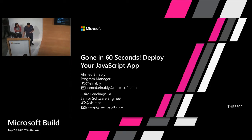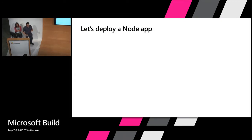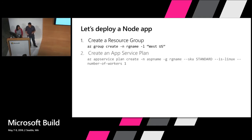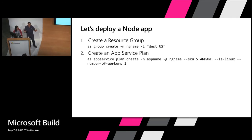But before doing that, let's actually look at what's the current experience. So to deploy a node app to Azure App Service, you need to create a resource group — actually, you need to know what a resource group is and then create one. You need to create an App Service plan. Again, you need to research what an App Service is. You need to know, like for Node, is it a Windows App Service or Linux App Service, what size, and so on. And then literally know what the command is.